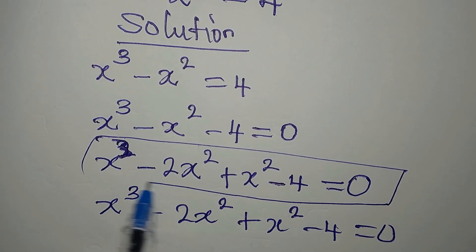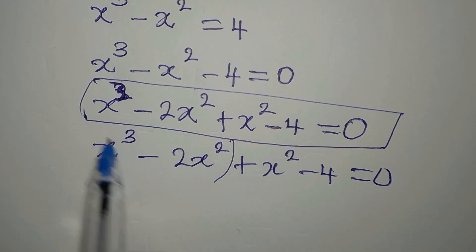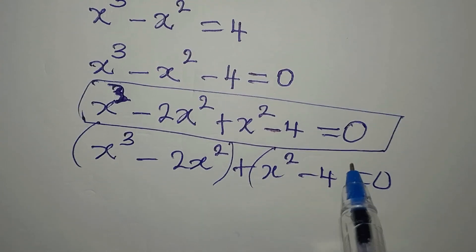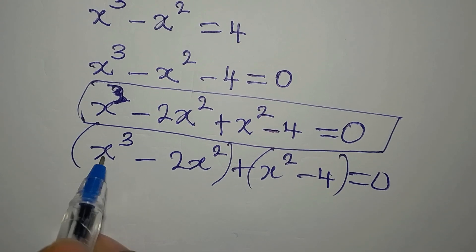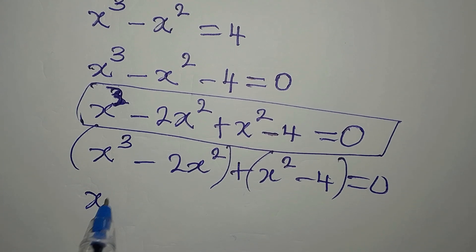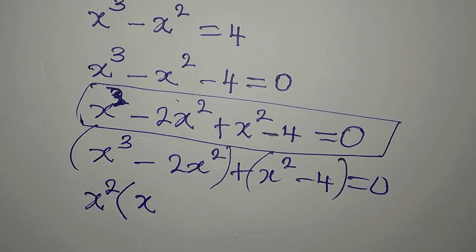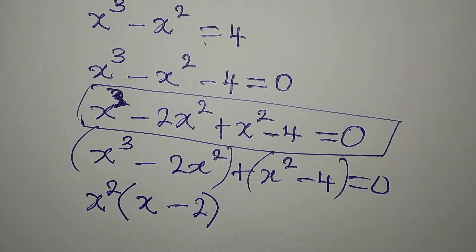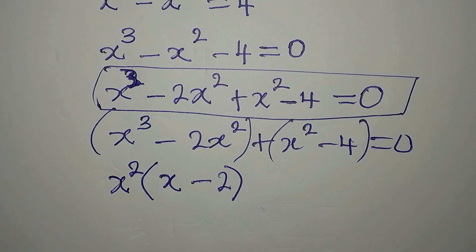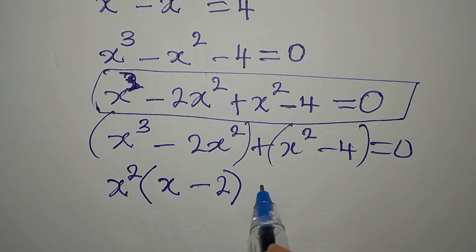Now I'm going to group these two and factorize, then these two and factorize. What is common to the first two is x squared, so x squared comes out as a common factor. Inside the bracket we have x, then minus 2x squared divided by x squared is 2. So if you open the bracket you get this right back.